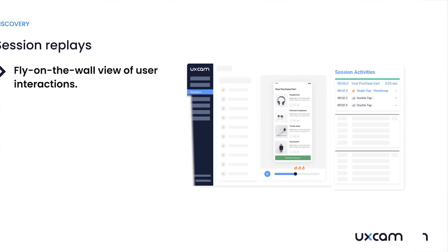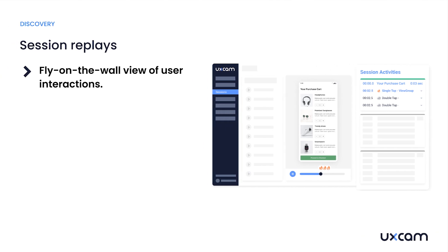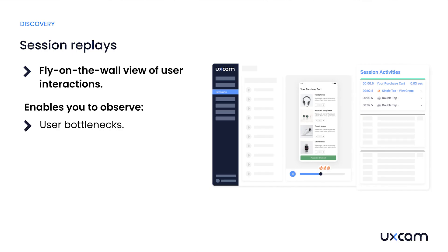Session replays are like having a fly-on-the-wall view of how users interact with your app — it's like looking over your user's shoulder, but without the creepiness factor. You can literally see where users get stuck, where they drop off, or what elements make them stick around. It's real-world usage in action. The downside is that while you see what actions users take, you may not fully grasp if the behavior is representative of all users or just an individual occurrence.